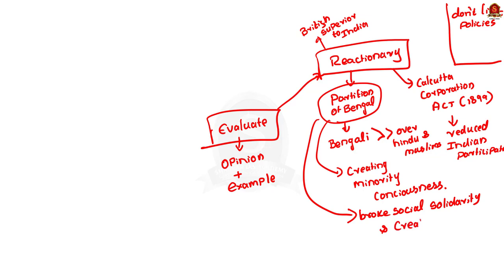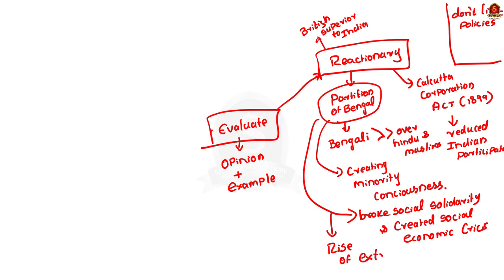All this happened according to Curzon's plans. The thing that came out as a surprise was the rise of extremists in Congress and their new method of freedom struggle. So in the long term, Curzon's reactionary policy did not serve its purpose — indeed, it did the opposite. So we have discussed two reactionary policies: the Calcutta Corporation Act and the partition of Bengal.